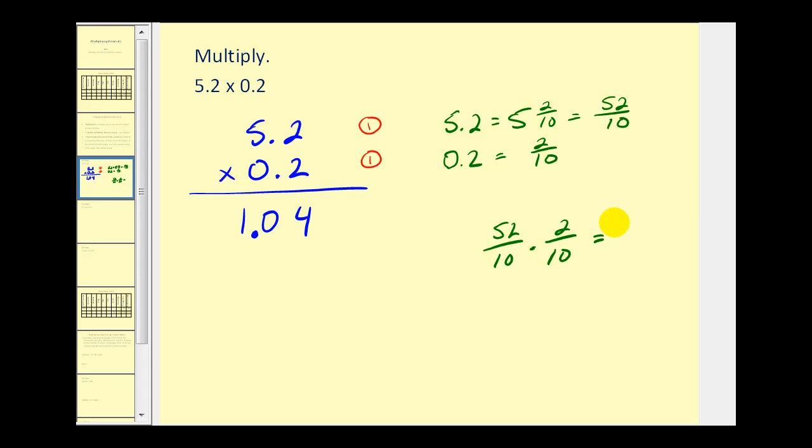We know when we multiply fractions, we simply multiply across the top and multiply across the bottom. When we multiply our denominators together, we get 10 times 10, or 100. And our numerator is 104.